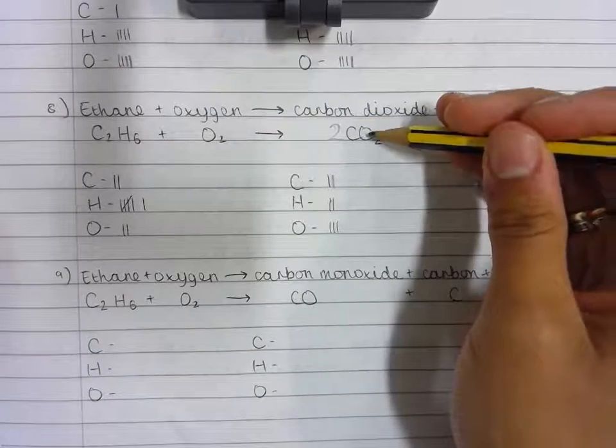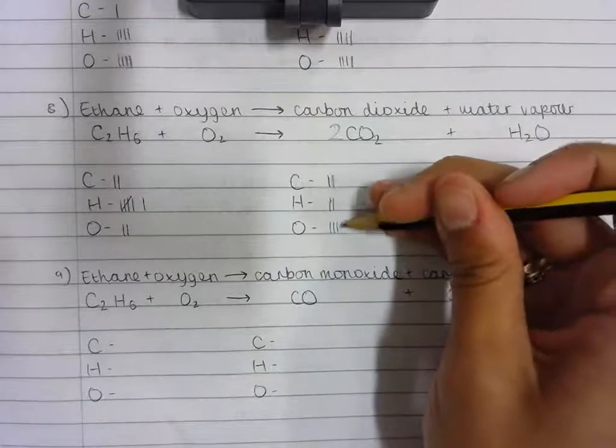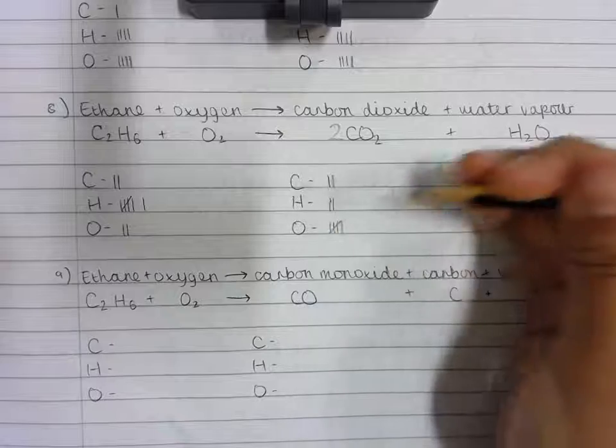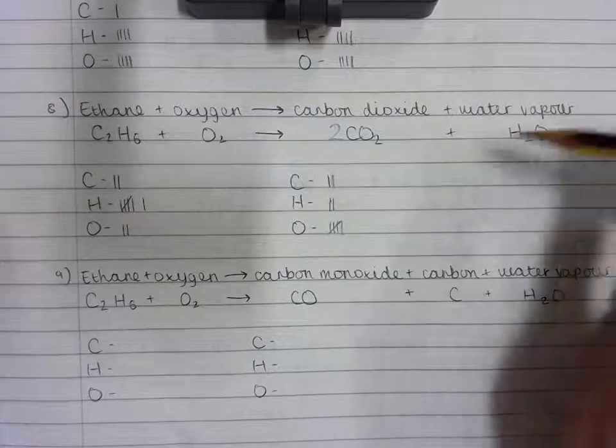Two times two is four, plus one is five oxygen atoms on the product side. I ask: is it balanced? The answer is still no.